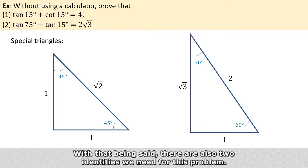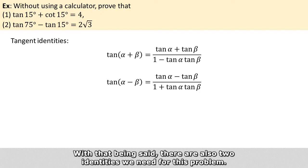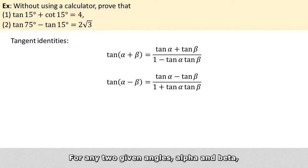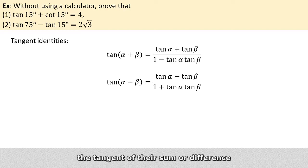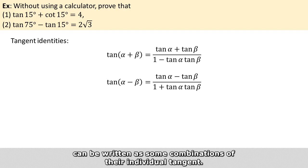And with that being said, there are also two identities we need for this problem. For any two given angles, alpha and beta, the tangent of their sum or difference can be written as some combinations of their individual tangent.